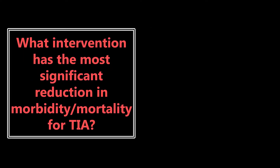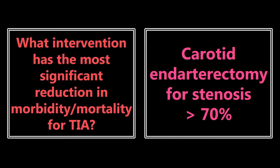What intervention has the most significant reduction in morbidity and mortality for TIA — that transient ischemic attack? This is not something we do in emergency medicine, but it is something we need to know. It is carotid endarterectomy. More specifically, for stenosis of greater than 70%, carotid endarterectomy has the most significant reduction in morbidity and mortality for TIA.